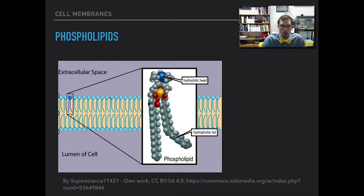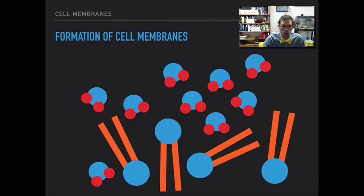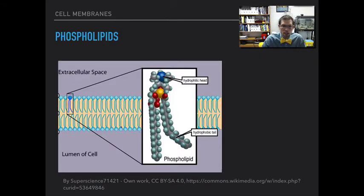And so you end up with this sheet of molecules that are essentially non-polar tails facing inward with the polar heads facing either the extracellular space or the lumen of the cell, the interior of the cell.